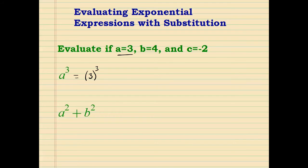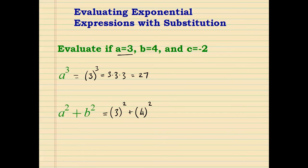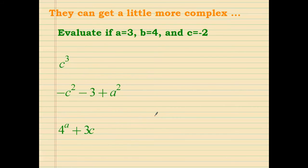Instead of a, I'm going to put 3 — to the third power. Pay attention to the fact that I'm putting the number inside parentheses; this is very helpful especially with negative numbers. 3 to the third power is 3 times 3 times 3, equal to 27. For a squared plus b squared with a equals 3 and b equals 4: 3 squared is 9, 4 squared is 16, and their sum is 25.